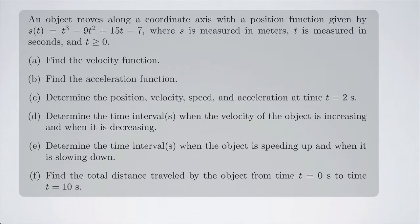An object moves along a coordinate axis with a position function given by s of t equals t cubed minus 9t squared plus 15t minus 7, where s is measured in meters, t is measured in seconds, and t is greater than or equal to zero.